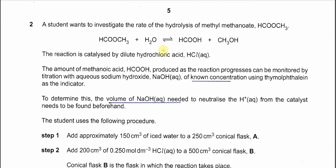Question 2 is about the hydrolysis of methyl methanoate, which is an ester. The hydrolysis of this ester will produce two products: methanoic acid and methanol. This reaction is catalyzed by dilute HCl, so it proceeds under acidic conditions.